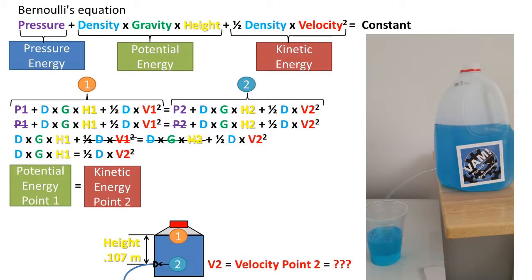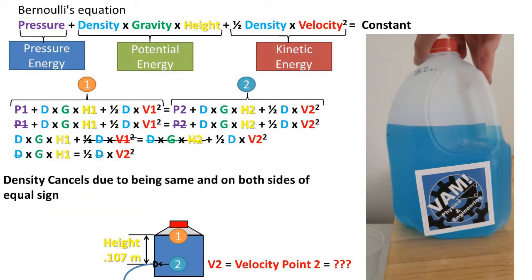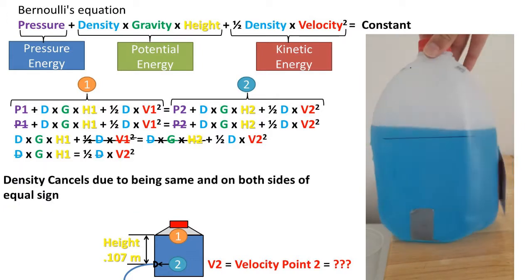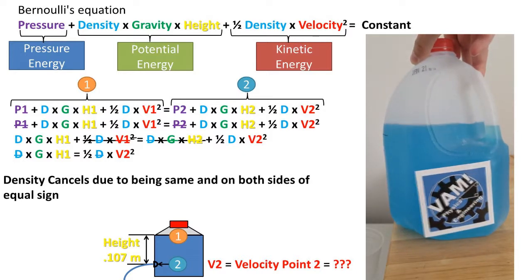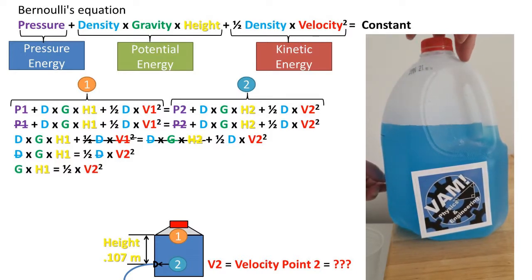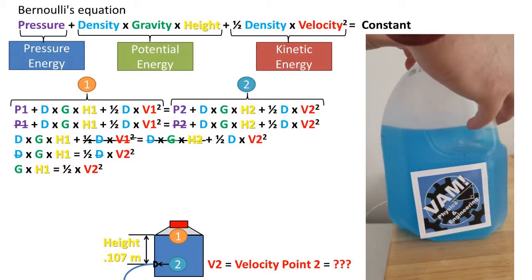This leaves us with an equation that states that the potential energy at point 1 is turned into kinetic energy at point 2. Due to the density of water being the same on both sides of the equation, it gets cancelled out and removed as well. We now are left with the acceleration due to gravity times the height of the waterline to the center of the hole, being equal to one-half the velocity at point 2 squared.